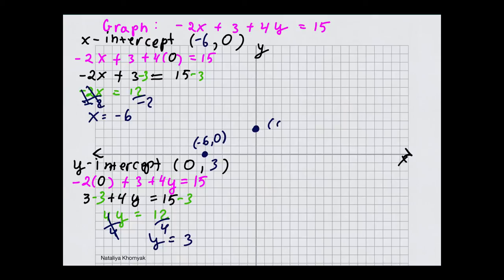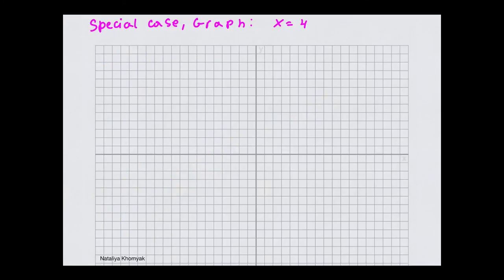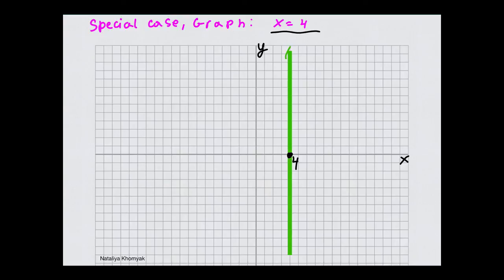Once you plot your intercepts, you draw a line going through them. Here we have a special case: we have to graph x equals 4. In this equation there is no y variable, so x is always equal to 4 no matter what y is. You will have a vertical line through x equals 4 — a line parallel to the y-axis through that value.